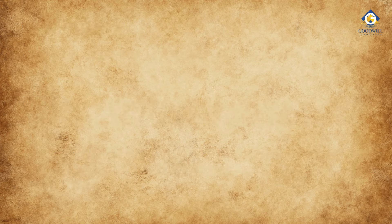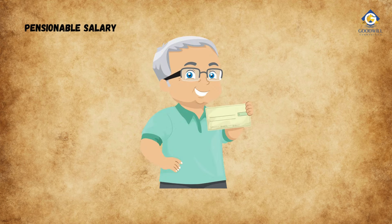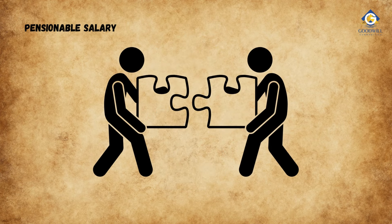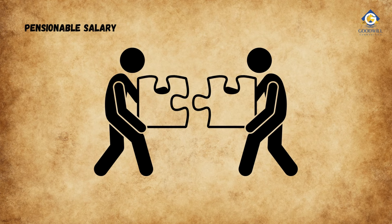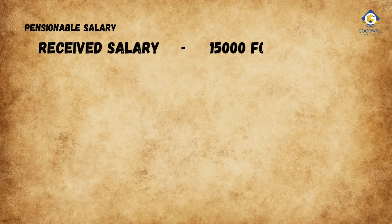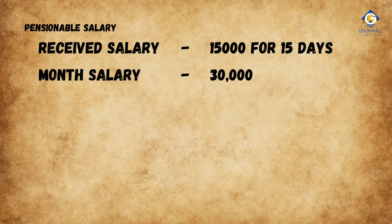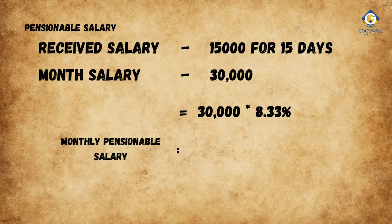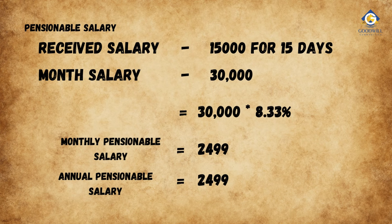Calculation of EPS — Pensionable Salary. Pensionable salary is the average of the last 12 months' salary which the individual received. In case the individual joined work on the 15th of a particular month, he would have worked only for 15 days. In such a case, the employee receives the benefit of any such non-contributory day. Say he received Rs. 15,000 for 15 days — for the calculation, the entire 30-day month salary will be taken, which will be Rs. 30,000. So the pensionable salary equals 30,000 (monthly salary) multiplied by 8.33% (EPF contribution). Monthly pensionable salary equals Rs. 2,499, and the annual pensionable salary is 2,499 multiplied by 12 months, equals Rs. 29,988.